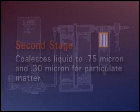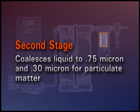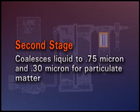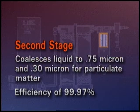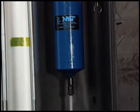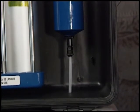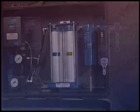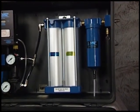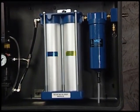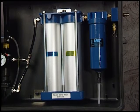The air then enters the second stage of the pre-filter, which coalesces liquid contaminants down to 0.75 microns in size and 0.3 microns for particulate matter, with an efficiency rating of 99.97%. The liquid contaminants are trapped in the lower chamber of the pre-filter and expelled out of the unit by the float drain. The air entering the air scrubber inlet is 99.97% free of liquid water and contaminants.